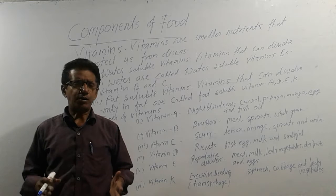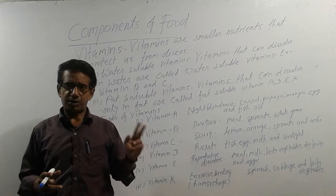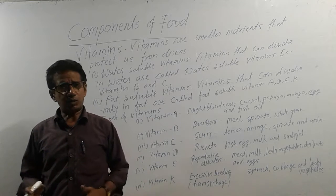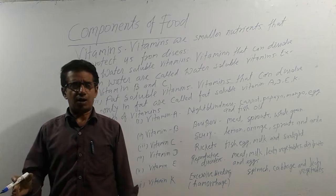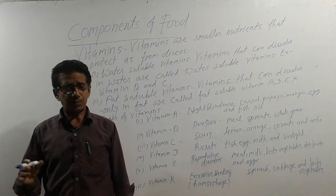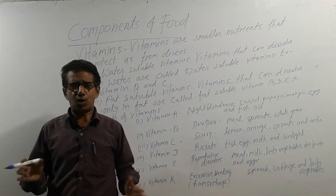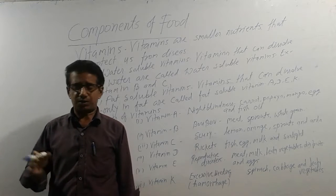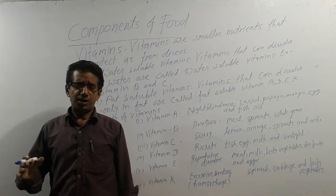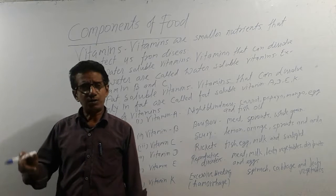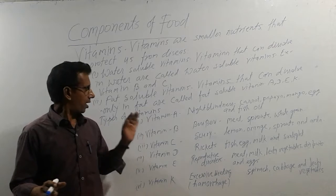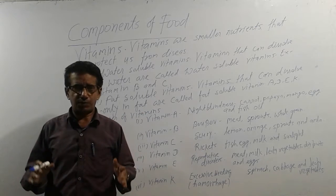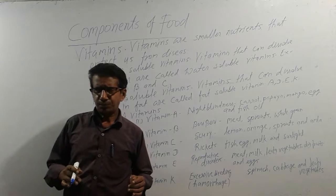On the basis of solubility, there are two types of vitamins: water-soluble vitamins and fat-soluble vitamins. The vitamins that can dissolve in water are called water-soluble vitamins. For example, vitamin B and vitamin C can dissolve in water, so they are called water-soluble vitamins. The vitamins that can dissolve in fat are called fat-soluble vitamins.